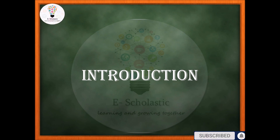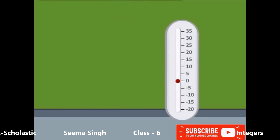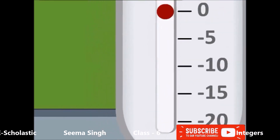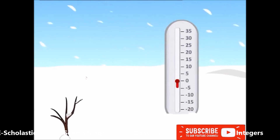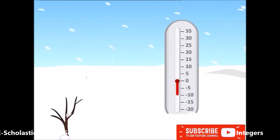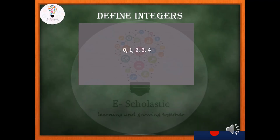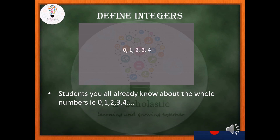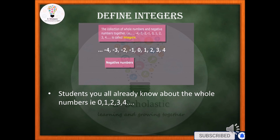Before we start, let's have an intro. Sometimes we need to use numbers with a negative sign. The most common area is while expressing temperature in cold regions — the temperature goes below zero and is expressed as negative numbers. In this lesson we will learn about the collection of negative numbers, positive numbers, and whole numbers, which is also known as integers.